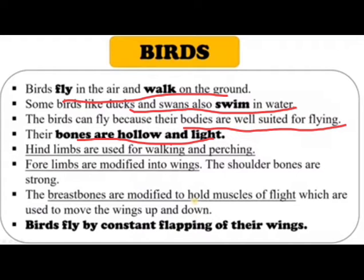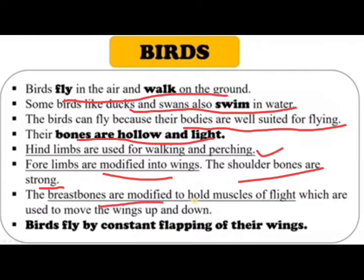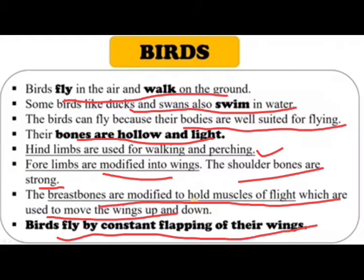Because of their lightweight hollow bones, birds can easily fly in the air. Hind limbs are used for walking and perching. The forelimbs are modified into wings. Shoulder bones are strong, and the breast bones are modified to hold flight muscles which move the wings up and down.